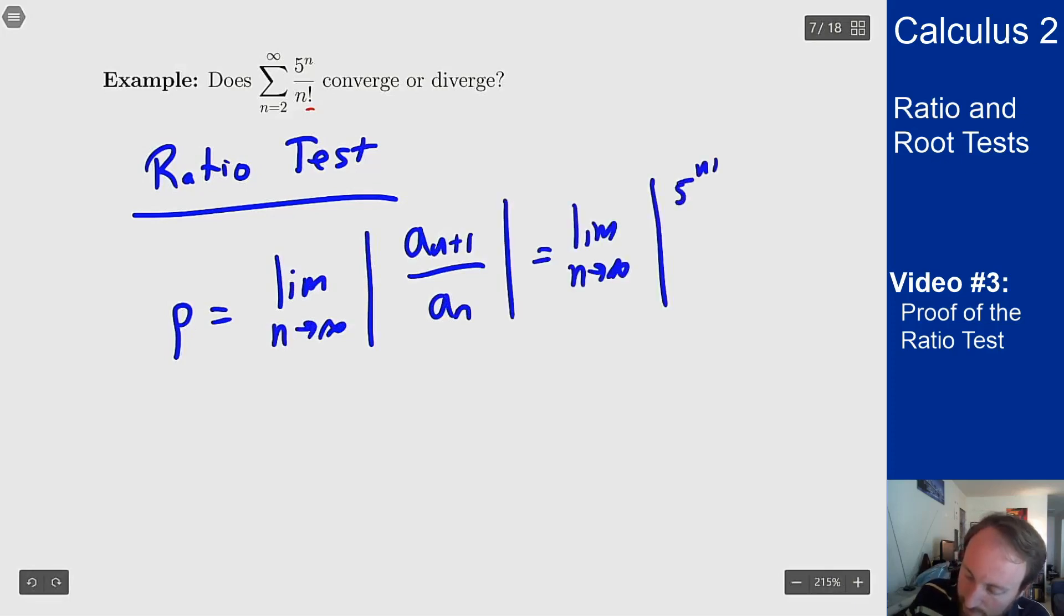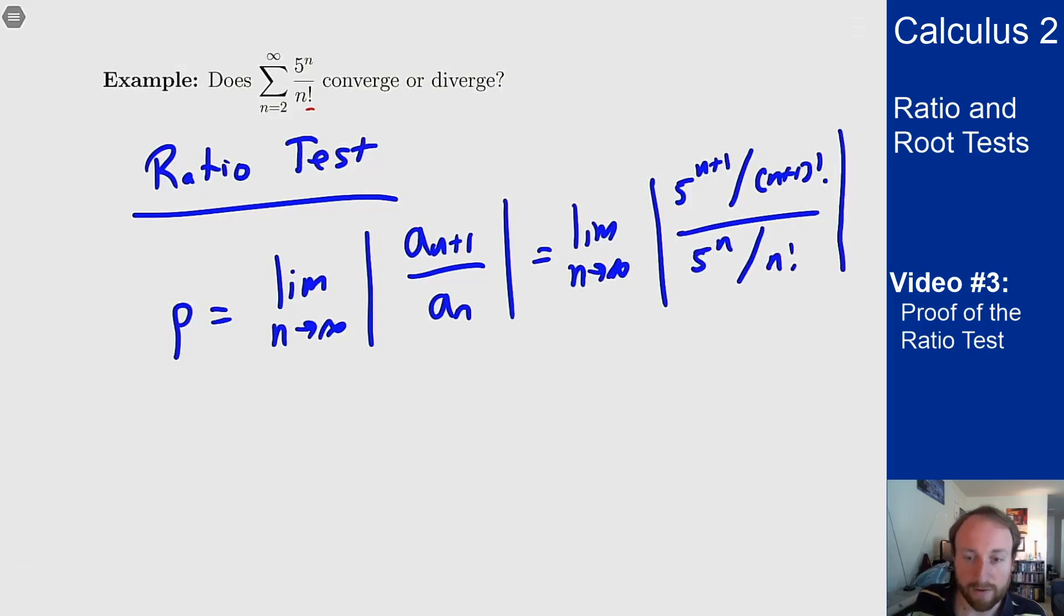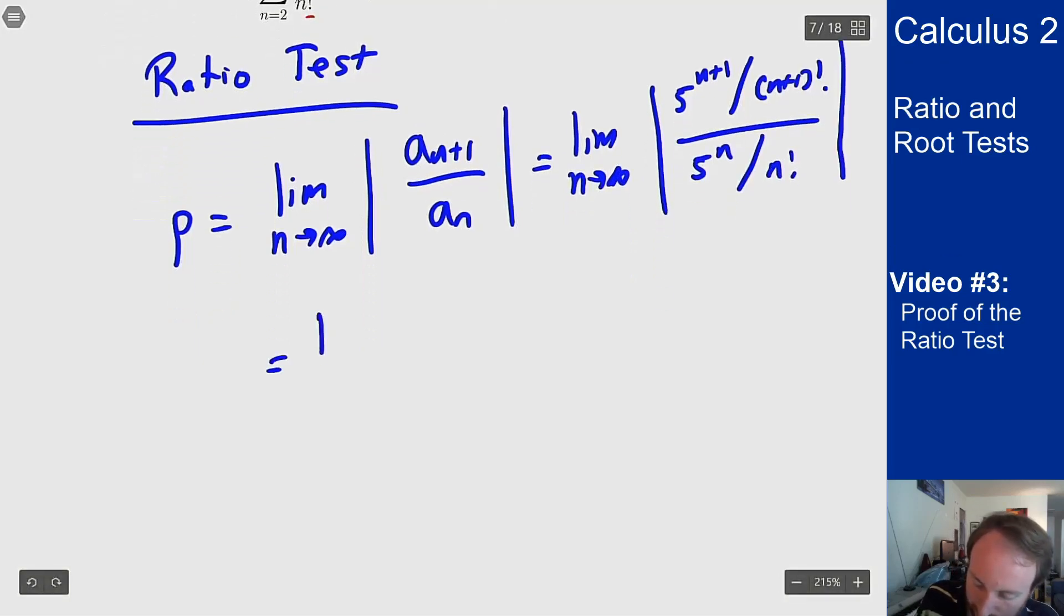5^(n+1) over (n+1)! divided by 5^n over n!. I can then flip my fractions around and simplify the expressions to give me the limit as n goes to infinity of 5^(n+1) over 5^n times n! over (n+1)!.